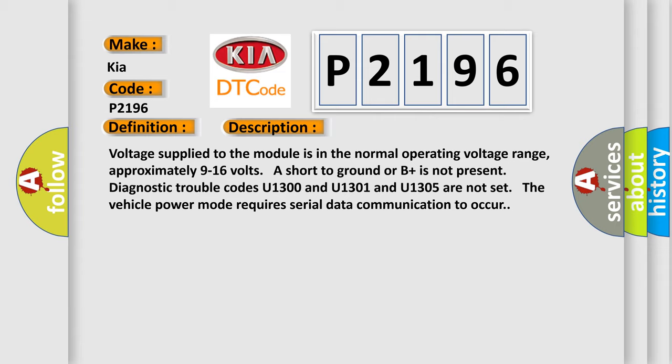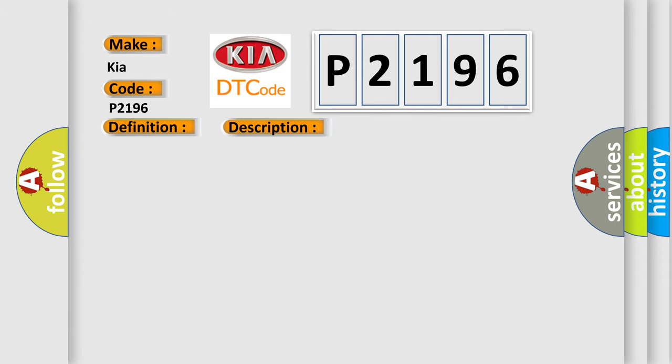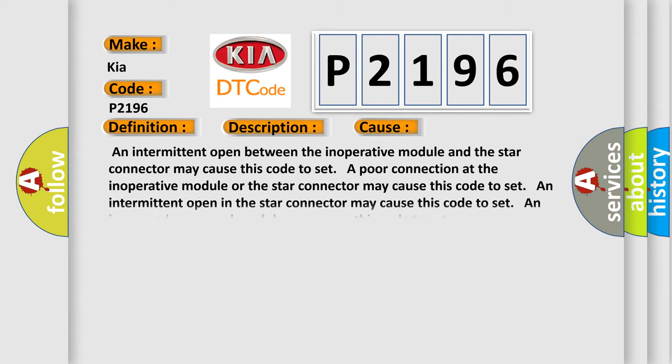This diagnostic error occurs most often in these cases: An intermittent open between the inoperative module and the star connector may cause this code to set. A poor connection at the inoperative module or the star connector may cause this code to set. An intermittent open in the star connector may cause this code to set. An improperly powered module may cause this code to set.